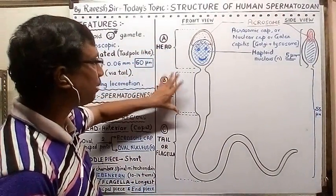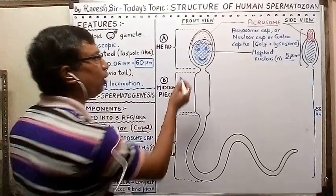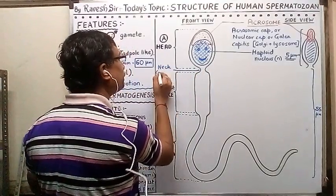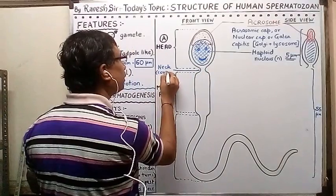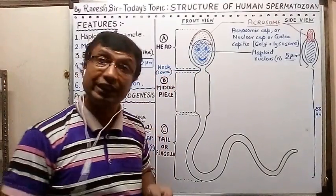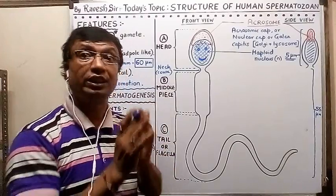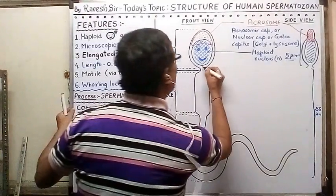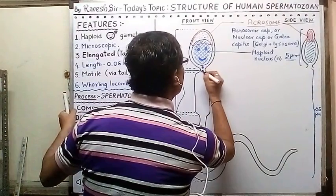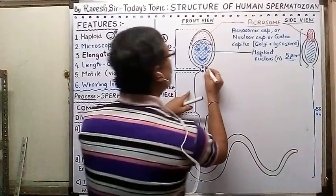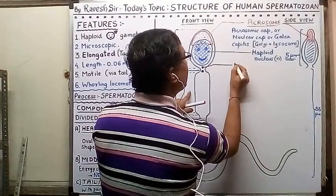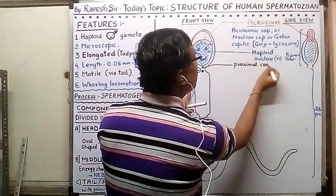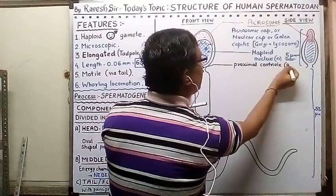The head connects to the next part, the middle piece, via a short narrow neck. In this neck region you will find two centrioles — a proximal centriole closer to the head (anterior side) and a distal centriole closer to the middle piece.